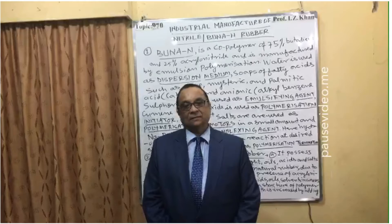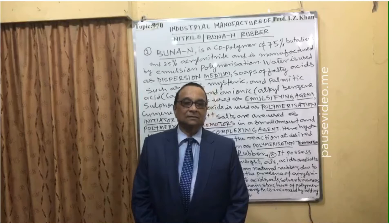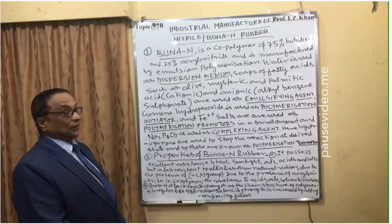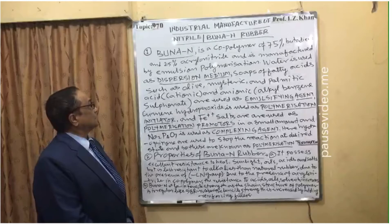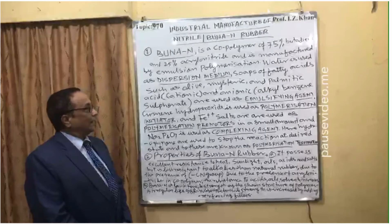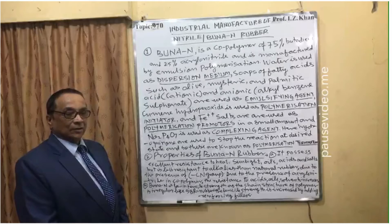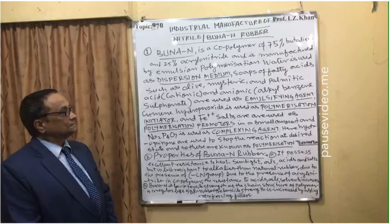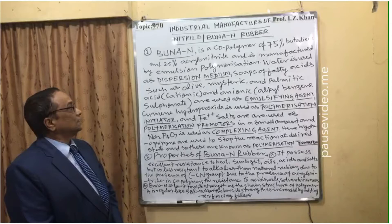Buna N, or nitrile rubber, is a copolymer of 75% butadiene and 25% acrylonitrile, and it is manufactured by emulsion polymerization. Water is used as the dispersal medium. Sources of fatty acids such as oleic, stearic, and palmitic acid serve as cationic emulsifying agents, while alkyl benzyl sulfonate is used as the anionic emulsifying agent.